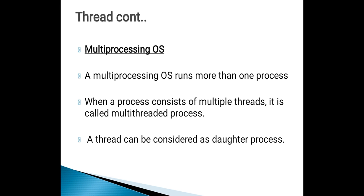A multiprocessing operating system runs more than one process. A multi-threaded process means a process consists of multiple threads. The figure we have seen is an example of a multi-threaded process, where in a single process we have seen n number of threads. So it is known as a multi-threaded process.